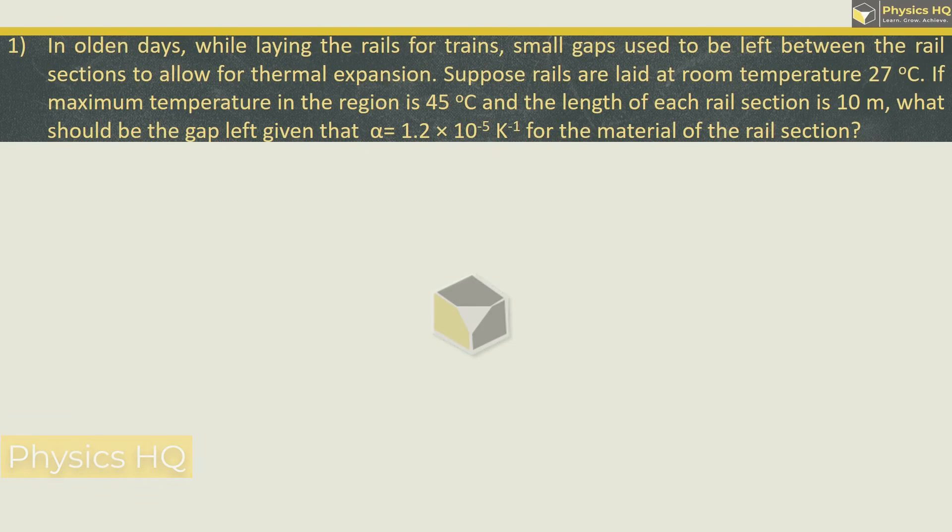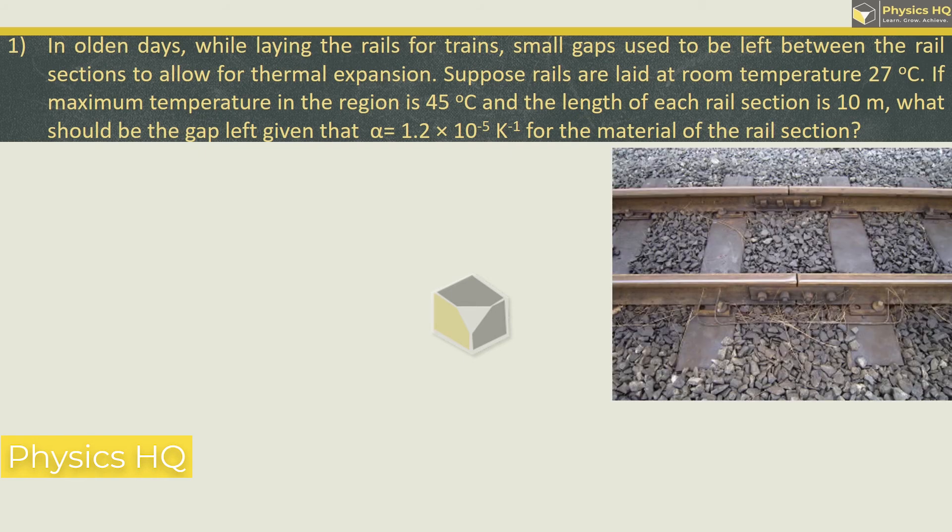Let us start with the first sum. In olden days, while laying the rails for train, small gaps used to be left between the rail sections to allow for thermal expansion. You can also observe this in this picture over here. Now suppose the rails are laid at room temperature 27 degrees Celsius and the maximum temperature in this region is 45 degrees Celsius, and the initial length of each rail is 10 meters. What should be the gap left given that alpha, coefficient of linear expansion, is 1.2 into 10 raised to minus 5 per Kelvin for the material of the rail section?